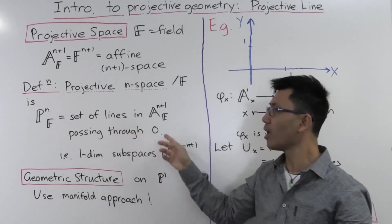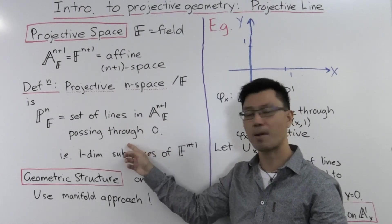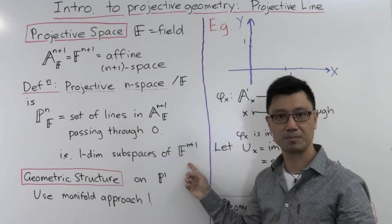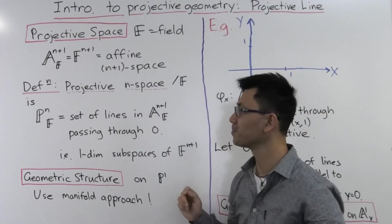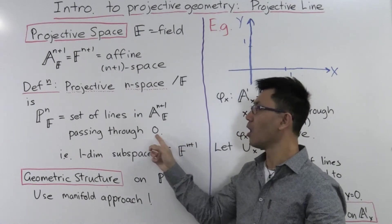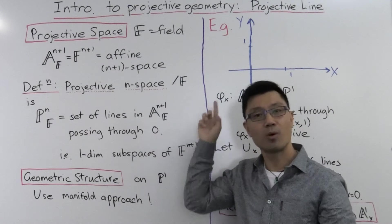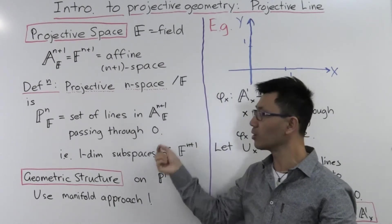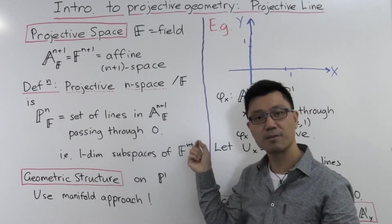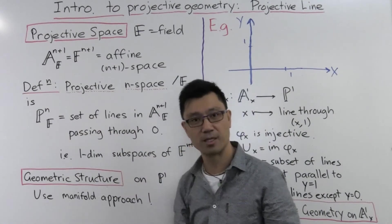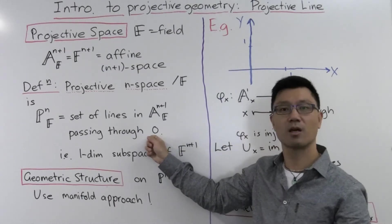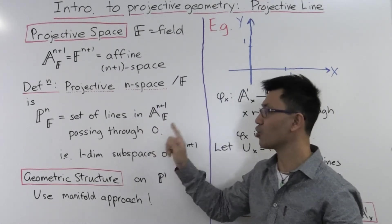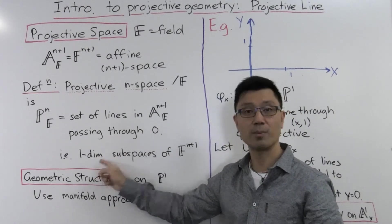One way to interpret this set of lines is that, since they pass through zero, they're just the one-dimensional subspaces of this vector space. There are two remarks to make before we go on. The first is that I chose this point zero — if I chose a different point, I could translate all these lines by that point, giving a similar looking set of lines. So this was just a choice; it wouldn't have made any real difference. But it means we can view these lines as one-dimensional subspaces instead.